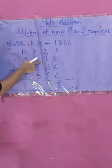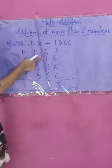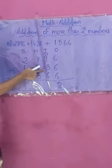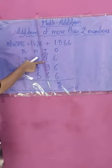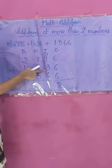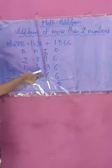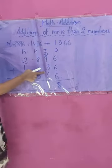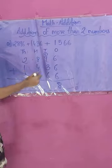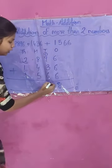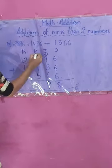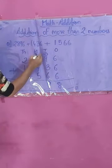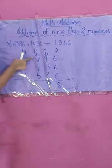Now we add the 10's place: 1 plus 9 plus 3 plus 6. So 1 plus 9 is 10, plus 6 is 16, plus 3 is 19. We write 9 here and carry over 1 to the next place.